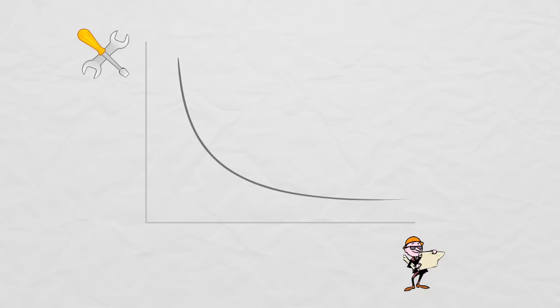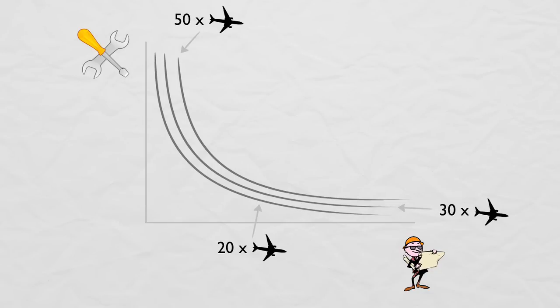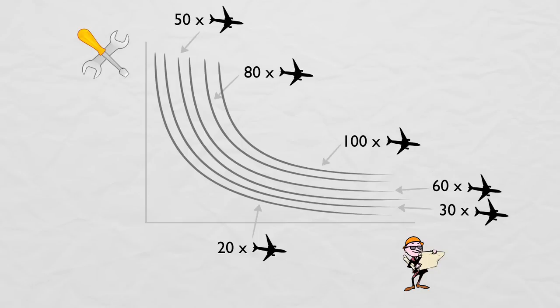So we have this curve. It represents all the points that make the same exact number of airplanes, say 50. Let's draw some more level sets. This level set might be all the combinations of capital and labor that produce 30 airplanes. And this one produces only 20. And these ones produce 60, 80, and 100 airplanes.